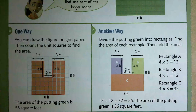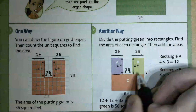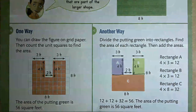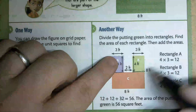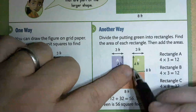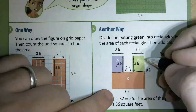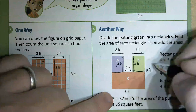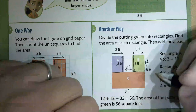Another way would be to break it into smaller pieces. They drew a line across here and a line across here. We already know this is three feet, two feet, three feet across, and four feet on each side, with eight across and eight down. Rectangle A is four (height) times three (base) = 12. Rectangle B is four (height) times three (base) = 12.